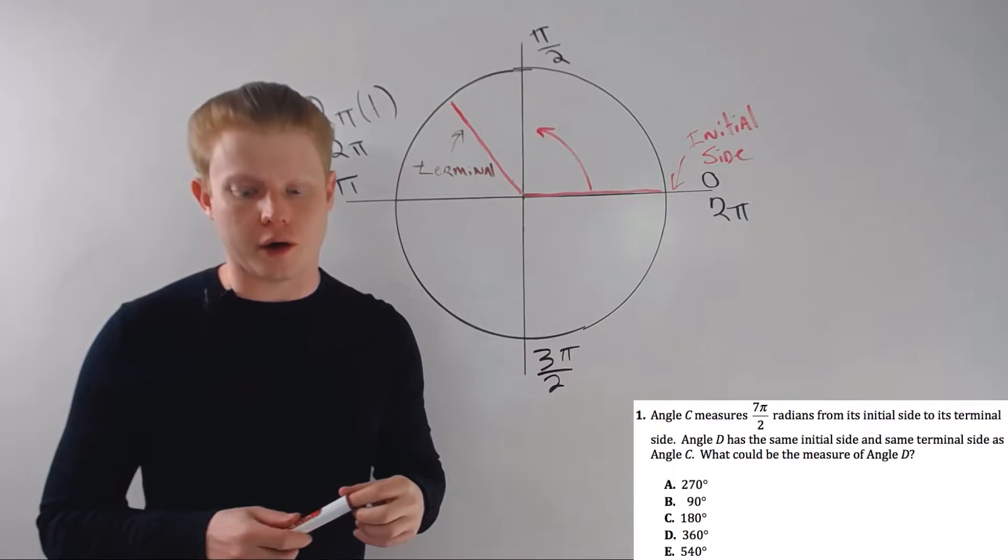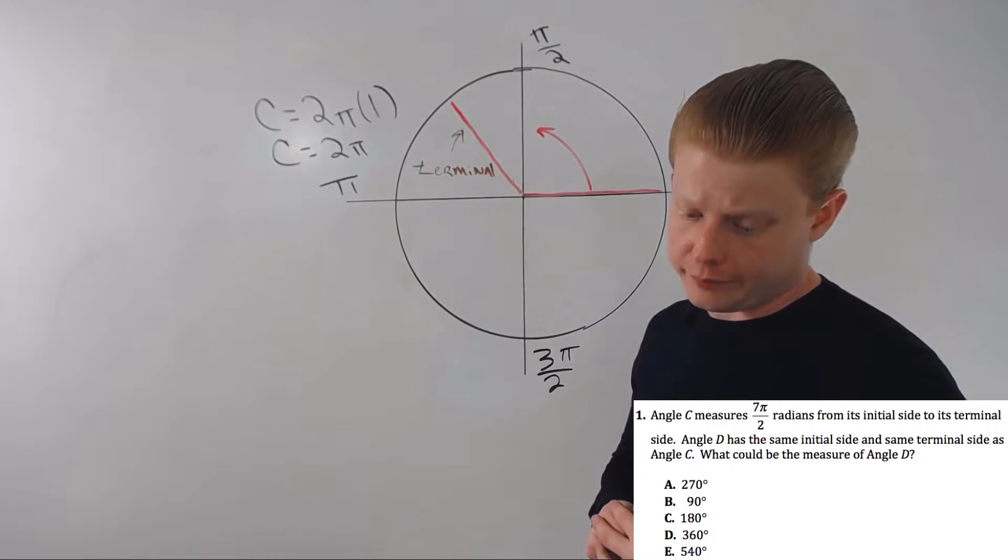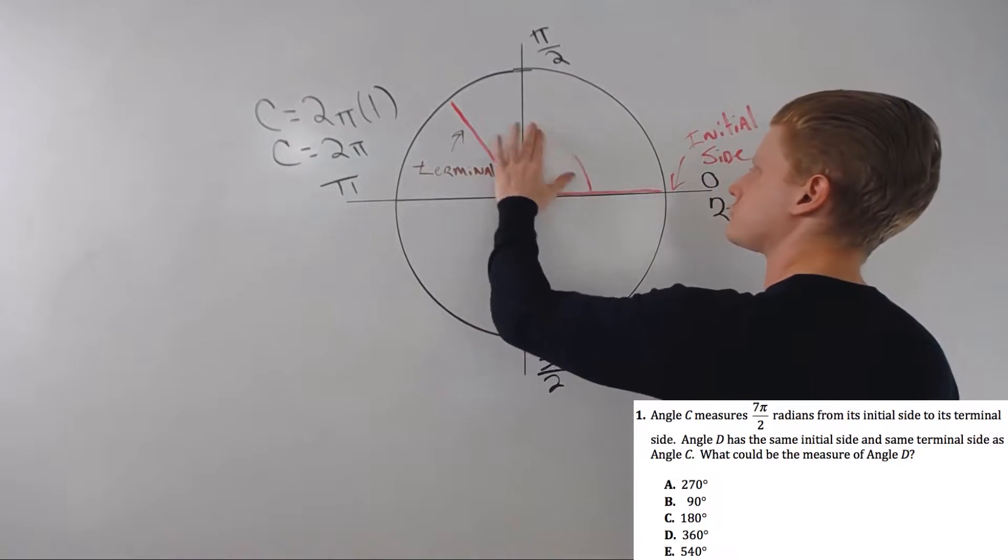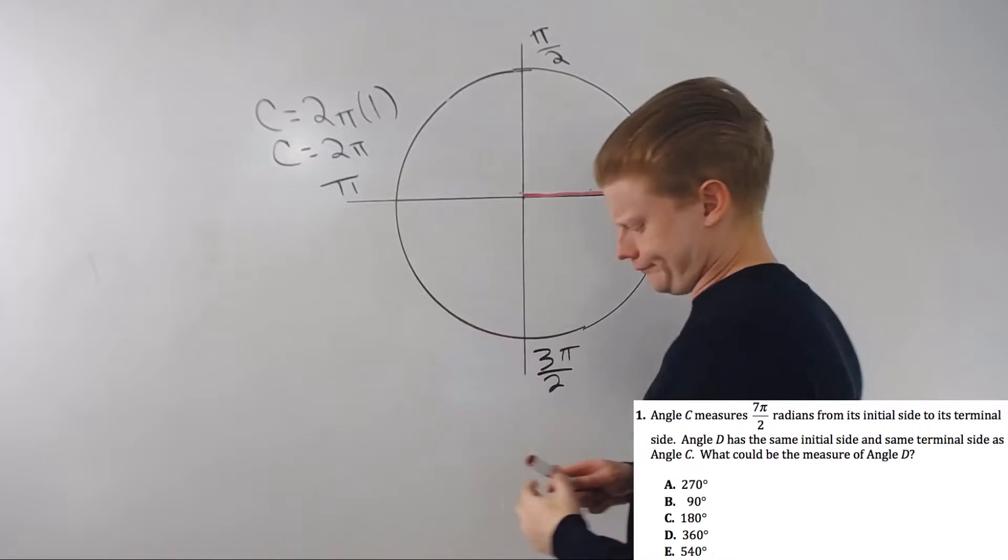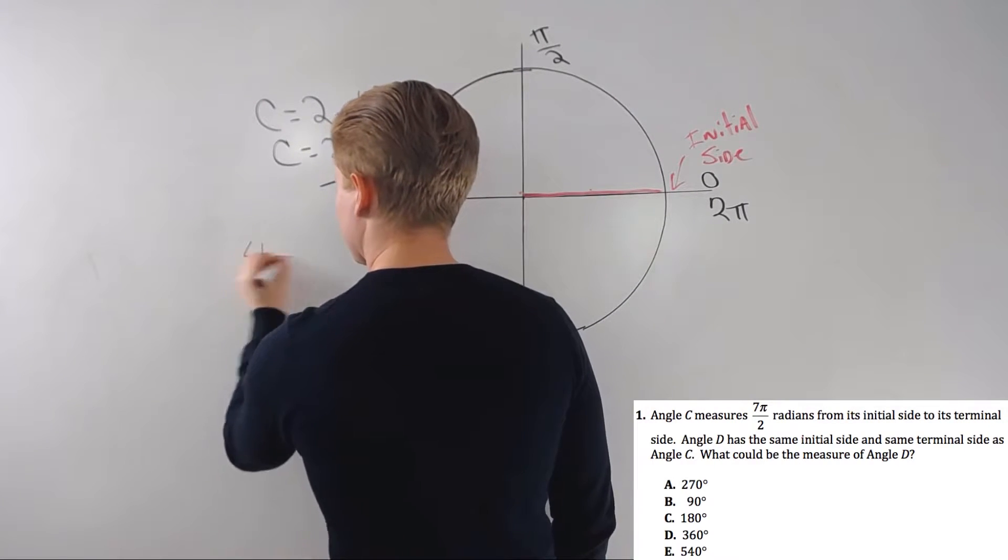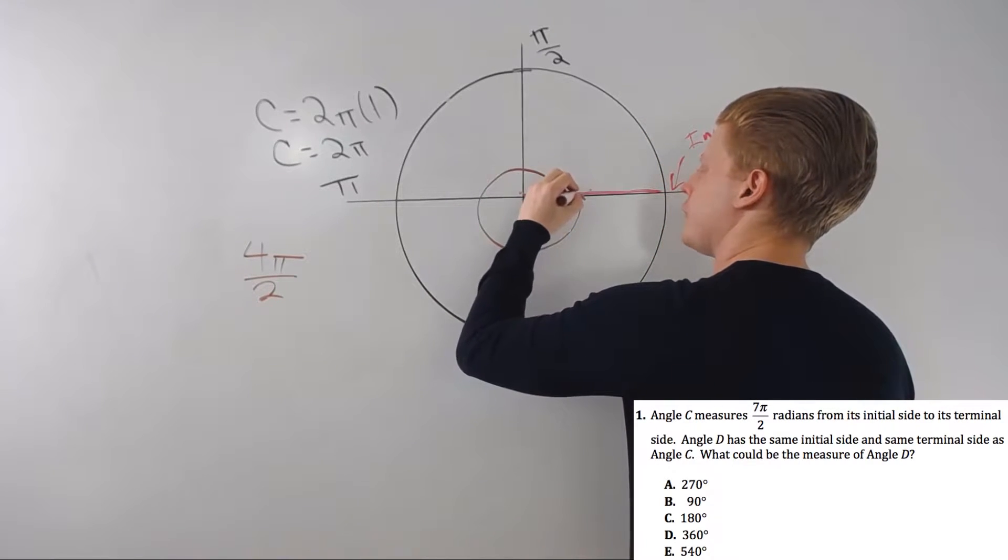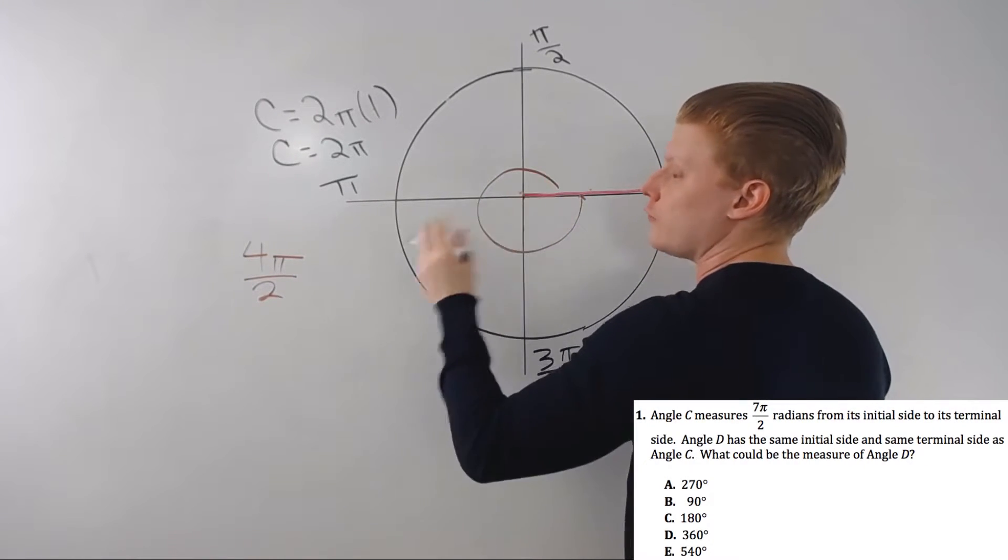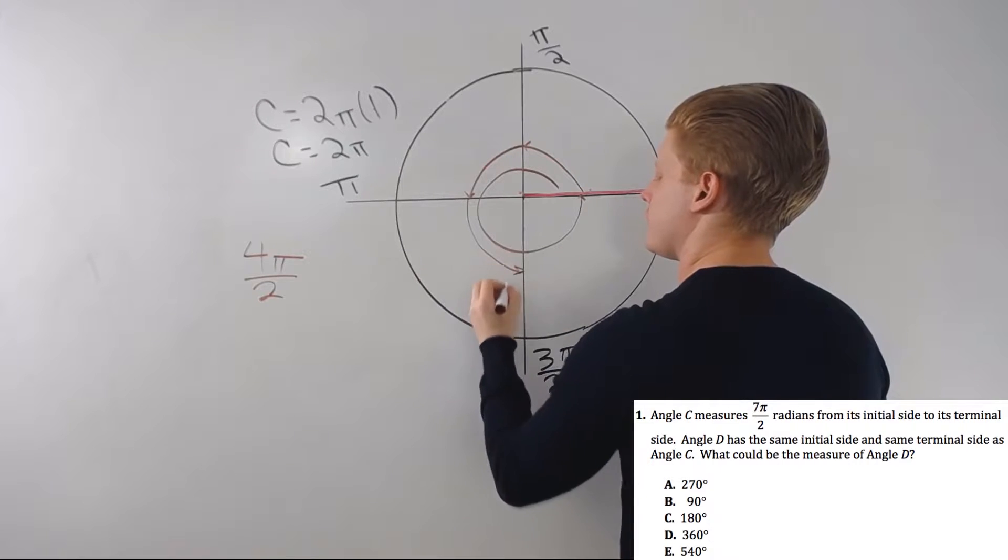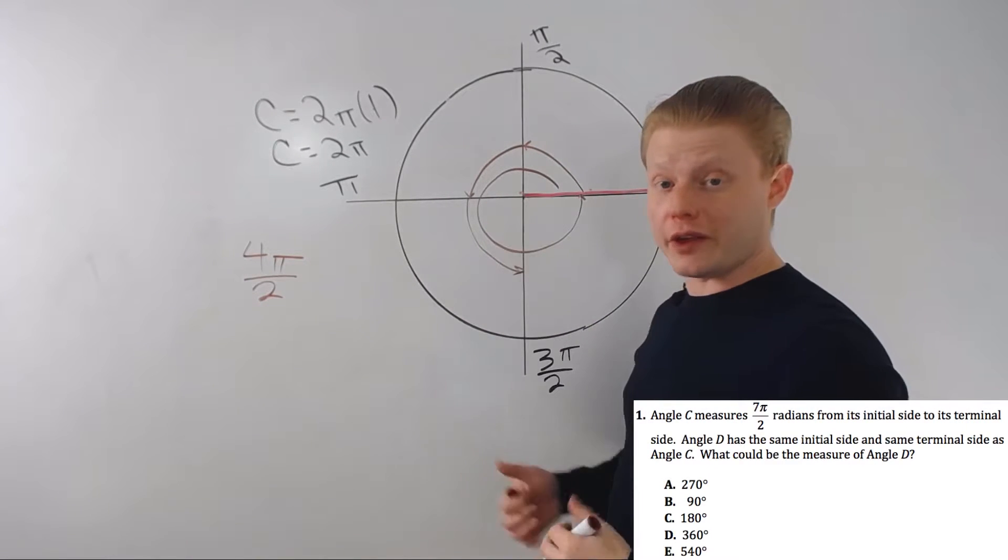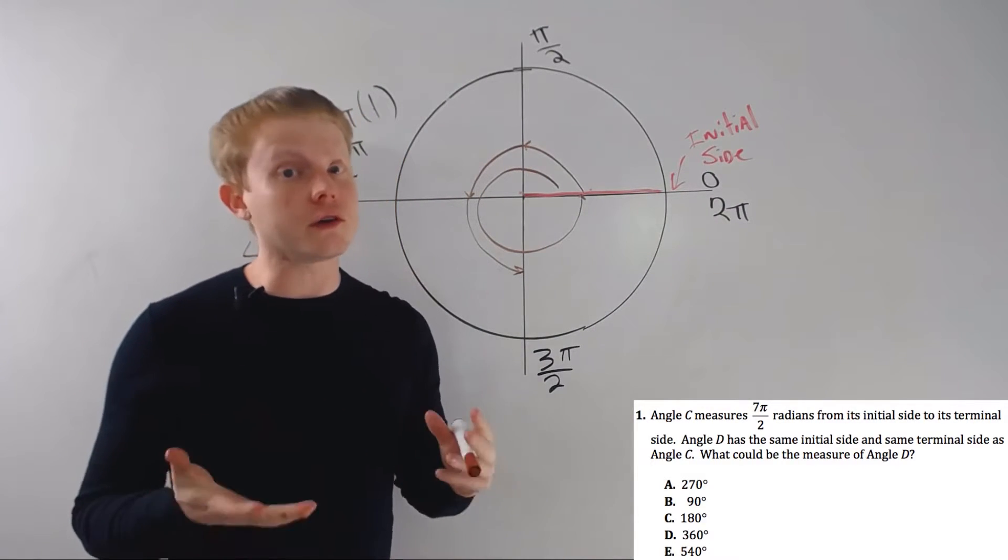So they ask you to figure out an angle that goes 7π over 2 radians from initial to terminal side. This is angle C. So that's way over 2, right? Because 4π over 2 radians is a whole circle. So it's like all the way around. And now I'm at 4π radians, or 4π over 2 radians, 5π over 2, 6π over 2, 7π over 2 radians. That was a little silly, but that's a way you can do these problems.